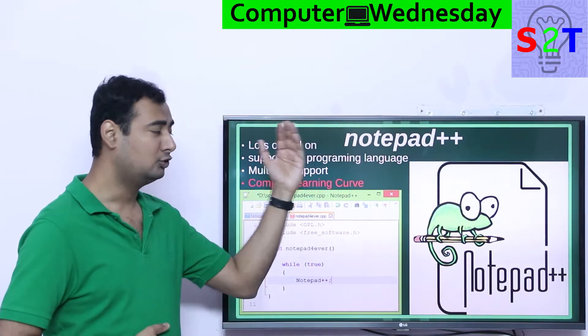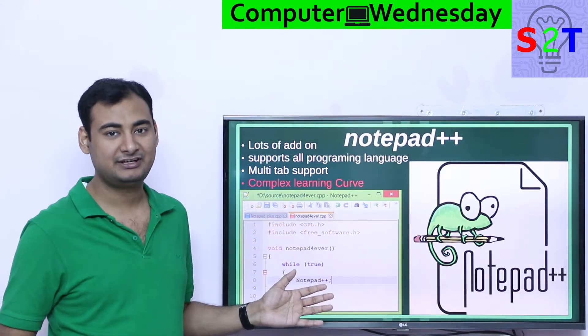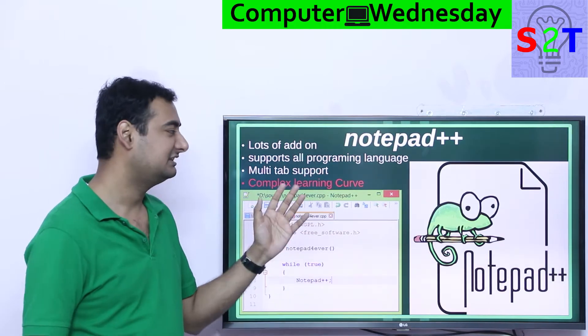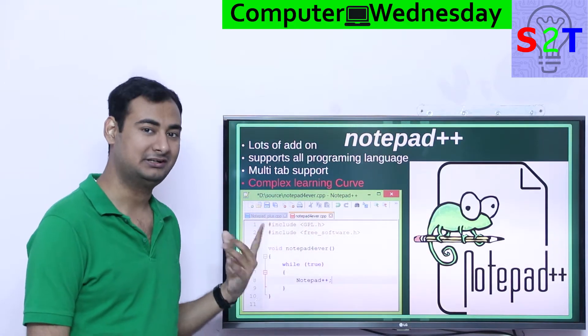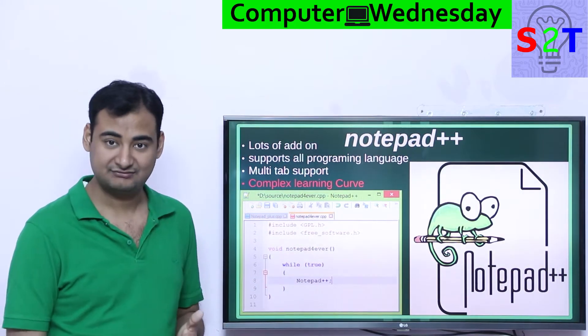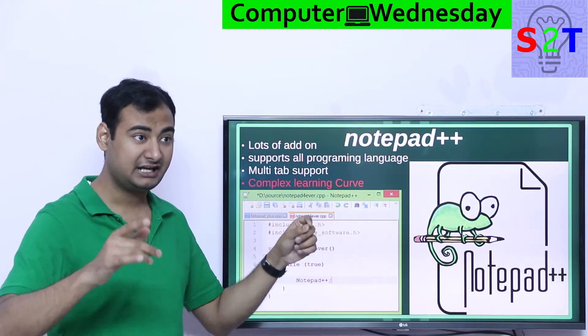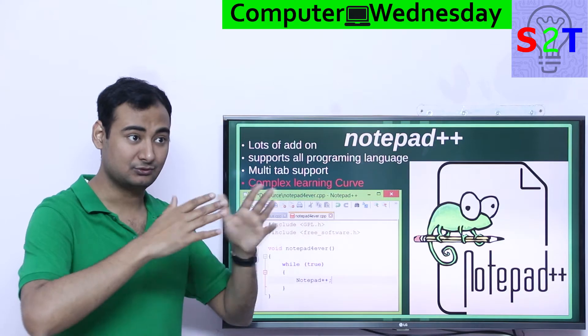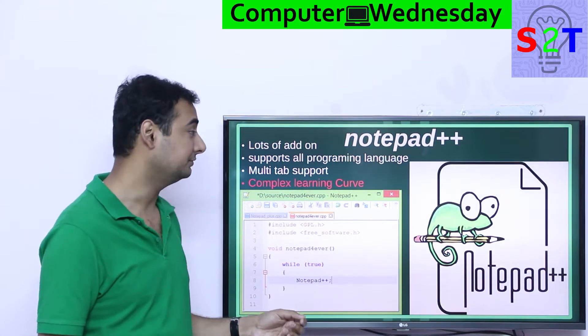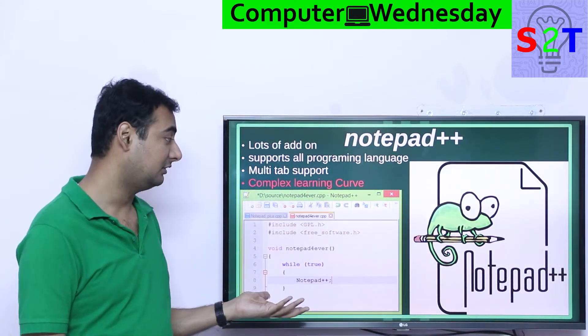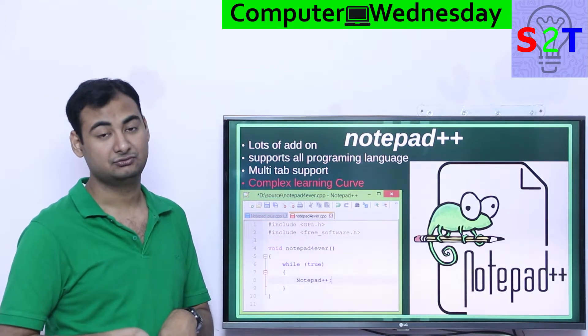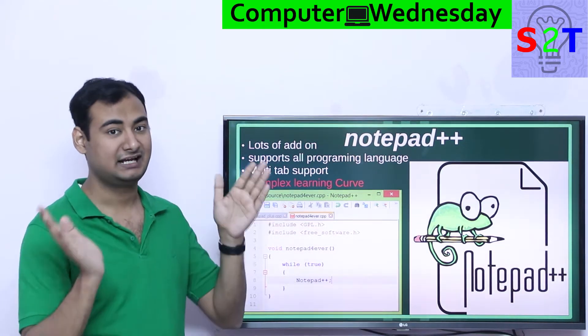Then we come to another application, Notepad++. If you have any programmer friend, you can almost bet money on it that they use this. It's that popular in the programming community. And there's a good reason for that. It has add-on abilities. It's free. And when I mean free, I mean open source level free. You can go into the code and make your own stuff if you want to.